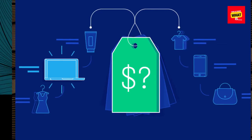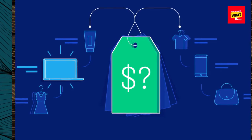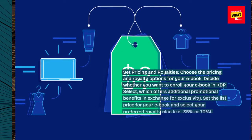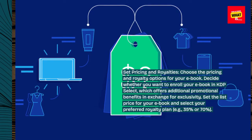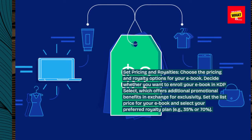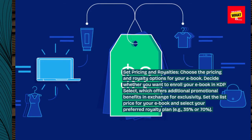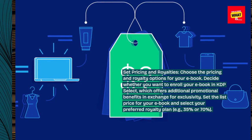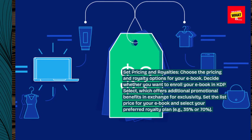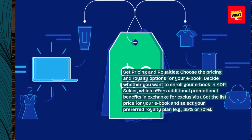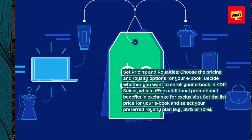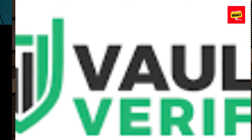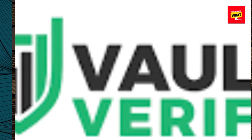Set pricing and royalties. Choose the pricing and royalty options for your e-book. Decide whether you want to enroll your e-book in KDP Select, which offers additional promotional benefits in exchange for exclusivity. Set the list price for your e-book and select your preferred royalty plan, e.g., 35% or 70%.